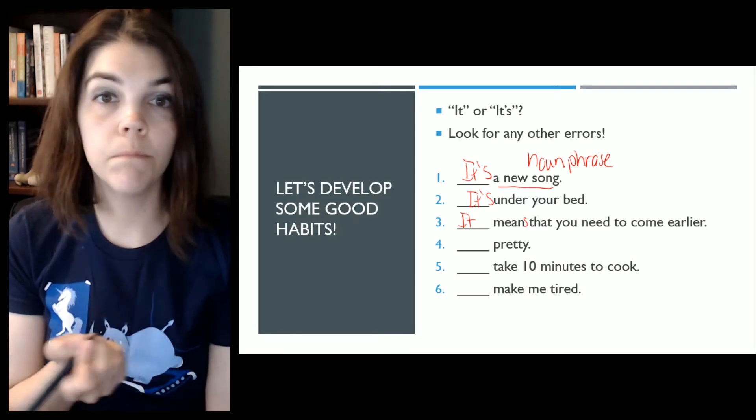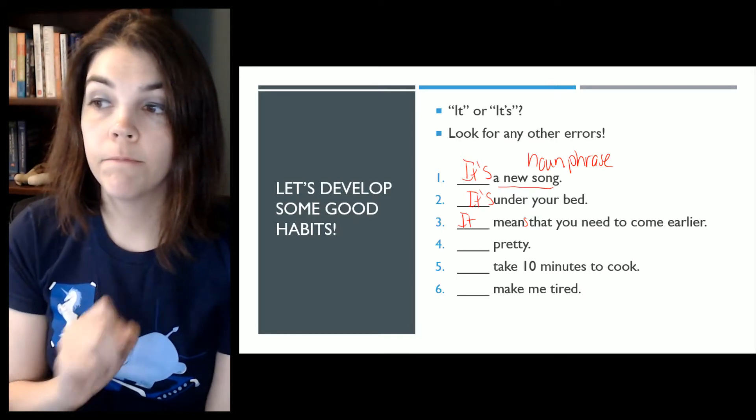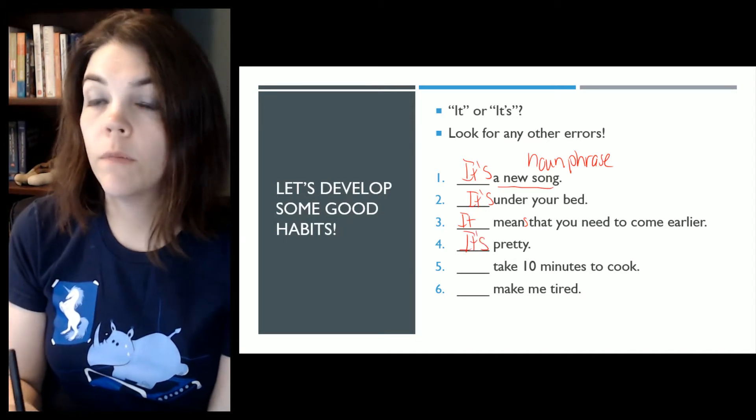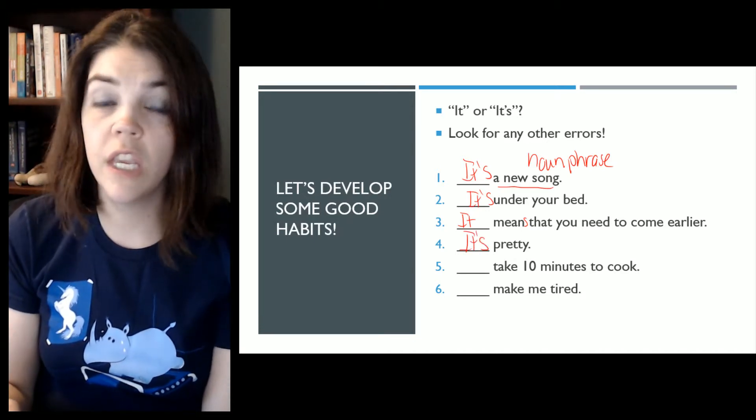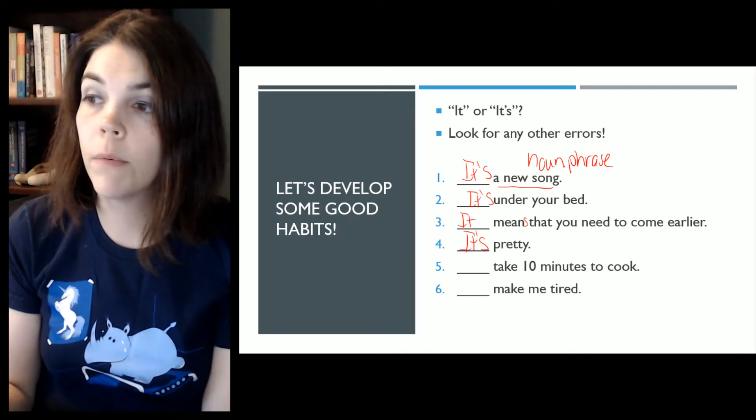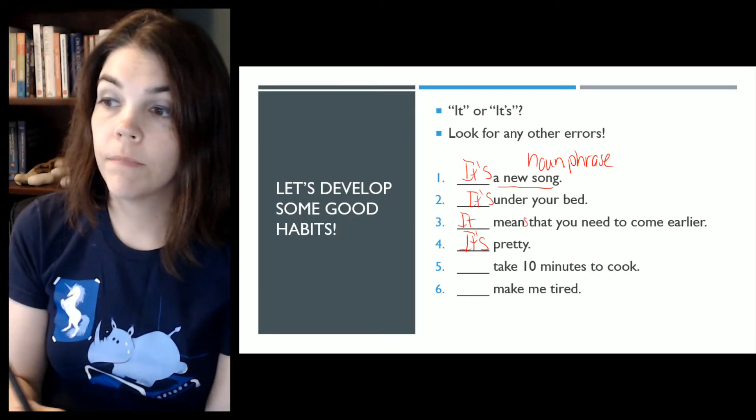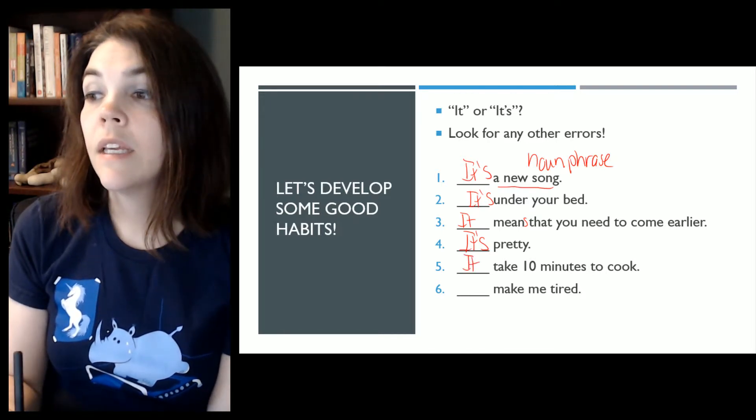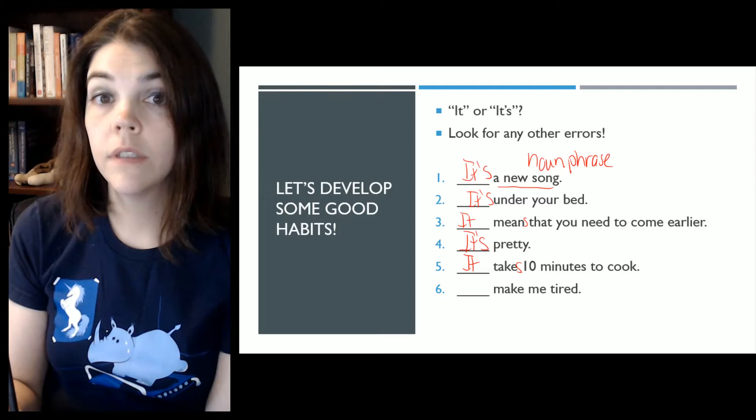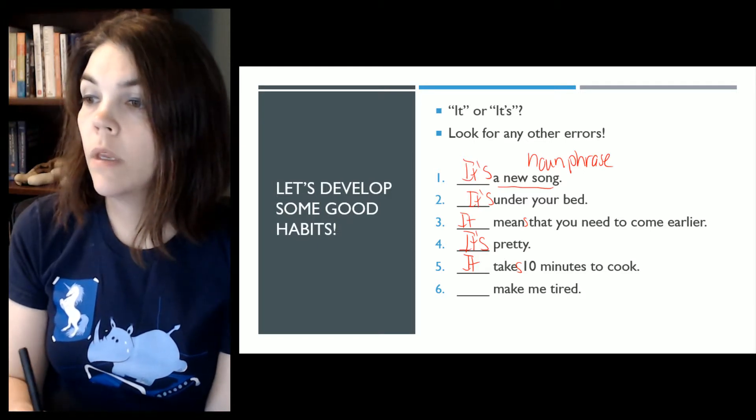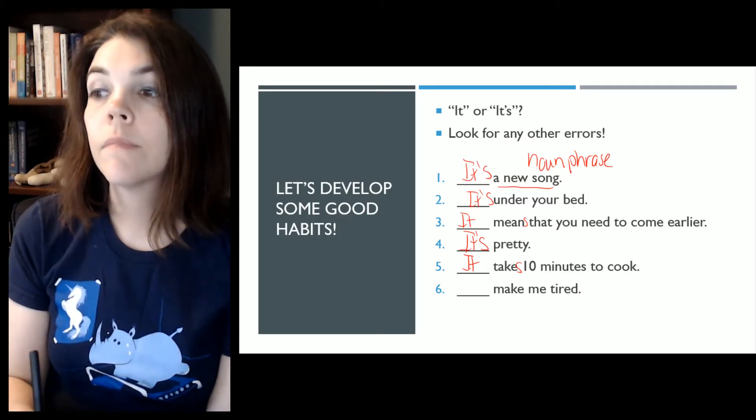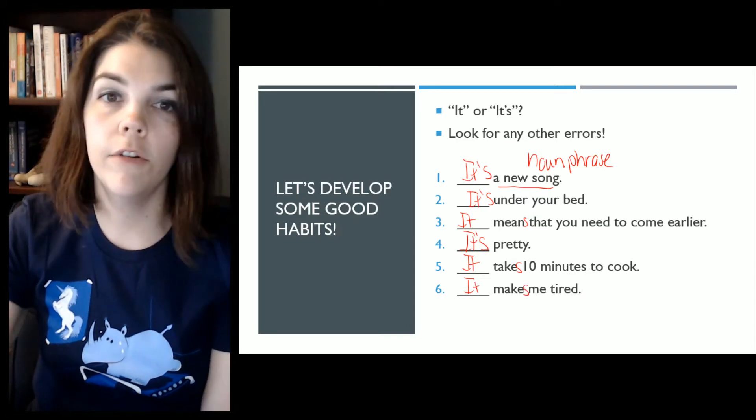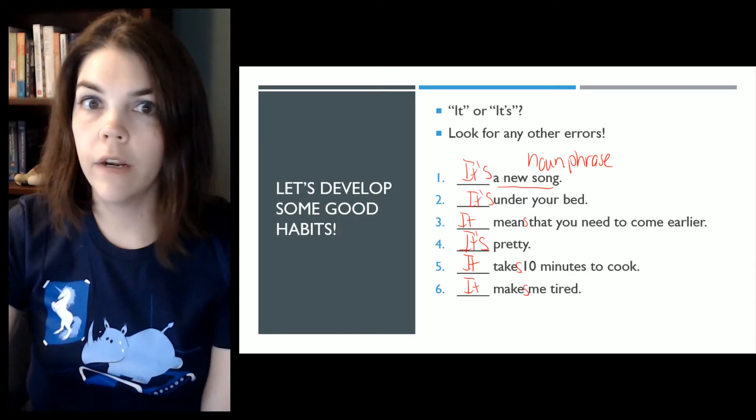All right, four, pretty. It should be it's because you need a main verb. If you just say it pretty, you don't have a main verb. About five. This should be it takes ten minutes to cook. Six. It makes me tired.